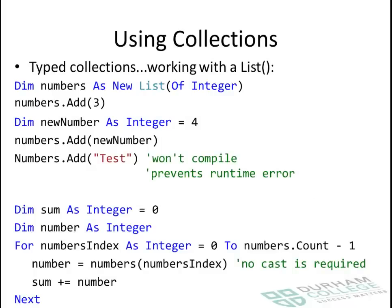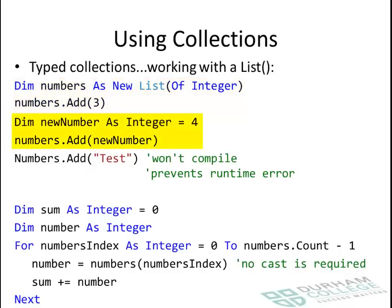Here's an example of a typed collection. Typed collections have stricter typing. This one is declared as a list, and the first thing that's happening is an integer is being added to it — it's a list of integers, so that's fine. Adding the next number references an integer variable, so that works properly. But when you try to add a string, it's actually going to not compile because it would cause a runtime error.